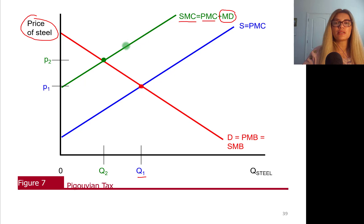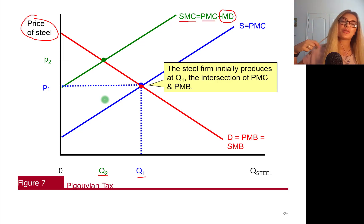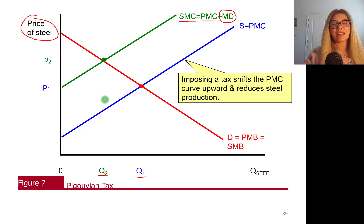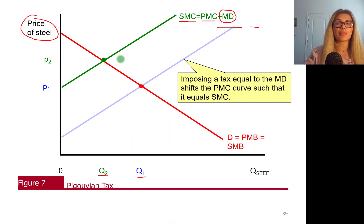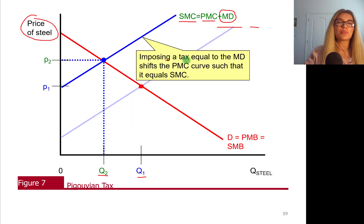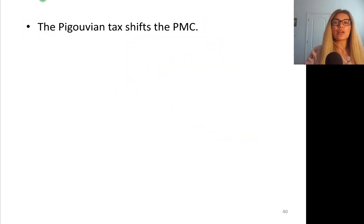The socially optimal level of steel production is Q2, much lower than Q1, and the price of steel should be higher. The steel firm initially produces at Q1, the intersection of private marginal cost and private marginal benefit. Imposing a tax shifts the private marginal cost curve upward, reducing steel production. Adding the tax to supply — private marginal cost plus tax — moves production closer to the socially optimal level, the social marginal cost. Imposing a tax exactly equal to the marginal damage shifts the private marginal cost curve to equal the social marginal cost. This is called Pigouvian taxation, achieving the socially optimal level Q2, which is also the profit-maximizing level.